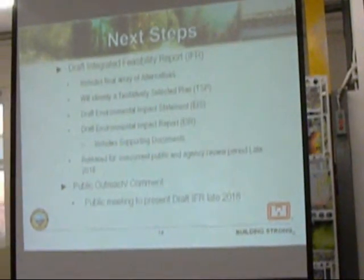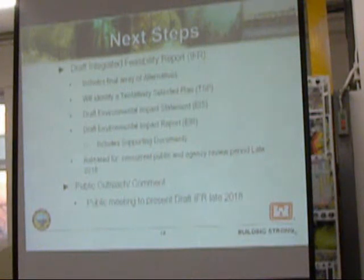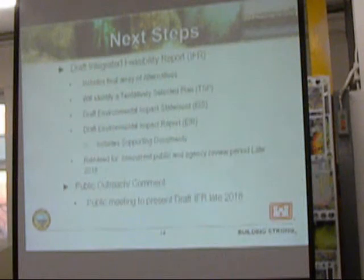That's the progress we've had to date. The next steps are to take those Best Buy plans — between three and five, as determined through the modeling efforts — along with requests from the city to include locally preferred alternatives. Those alternatives will meet the project objectives, including options for possible breakwater modifications. That final array will be summed up in the draft report, which will be released towards the end of this year. The draft report will include all those alternatives, the draft environmental impact statement, and the draft EIR, as well as all supporting documents for the modeling efforts.